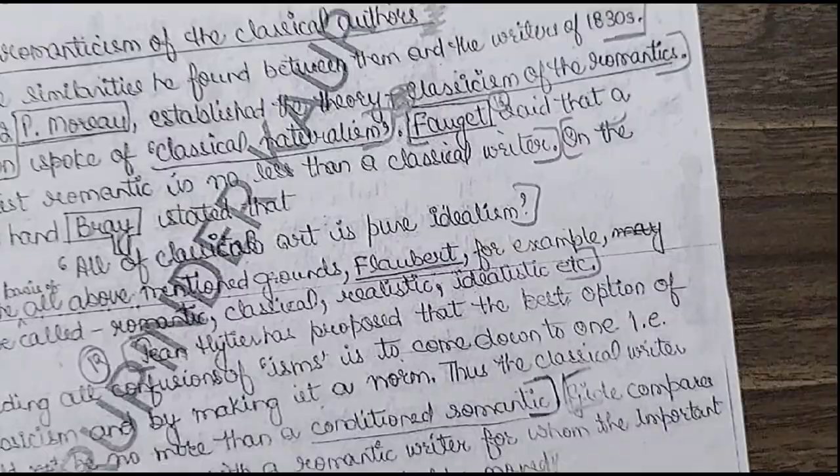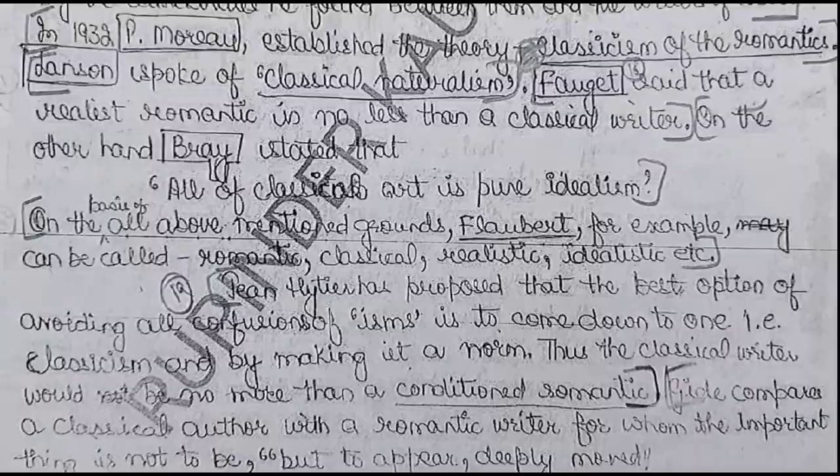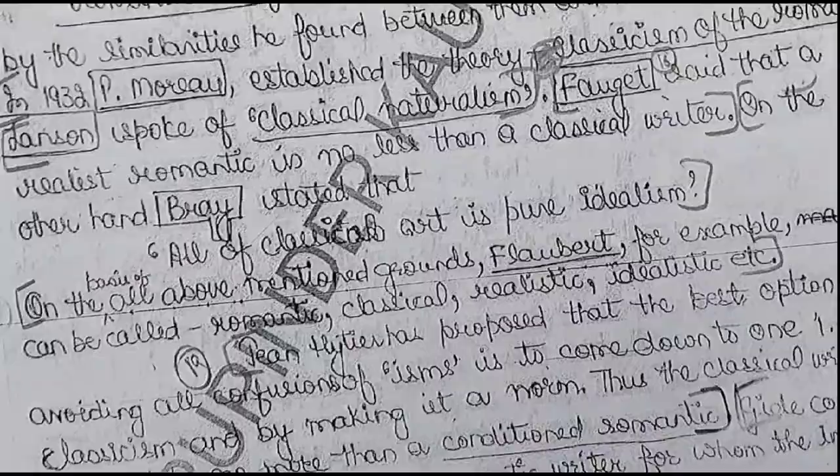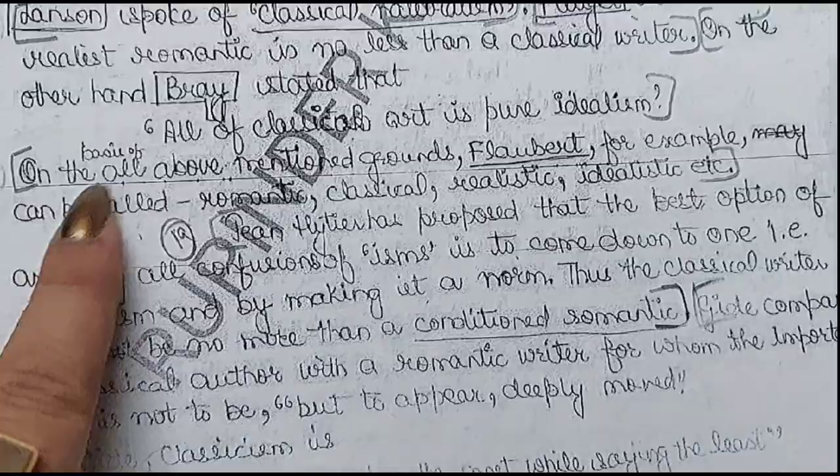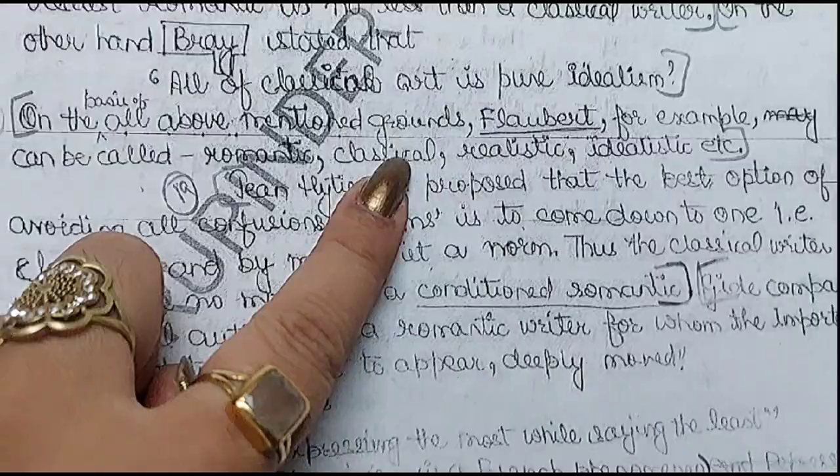Bray's opinion was that all classical art is based on idealism — the perfect husband, perfect wife, perfect son and daughter — ideal characters are created in it. So on the basis of all above-mentioned grounds, Flaubert can be called a romantic, a classical, a realist, an idealist, etc.